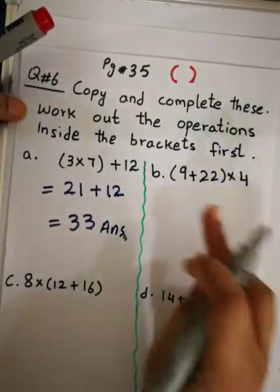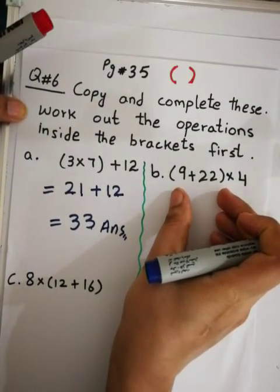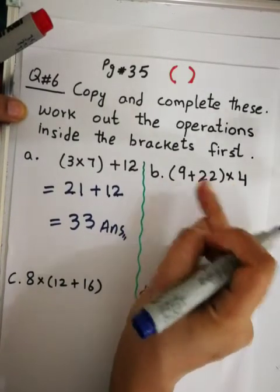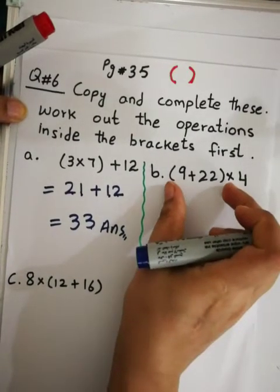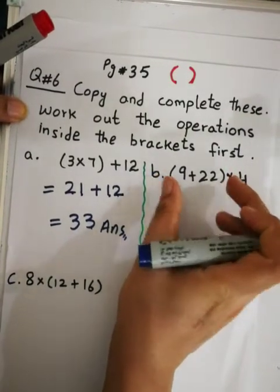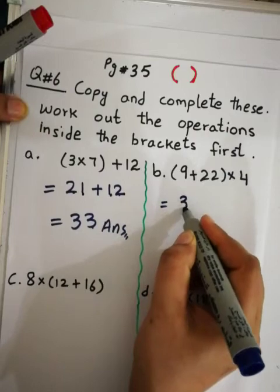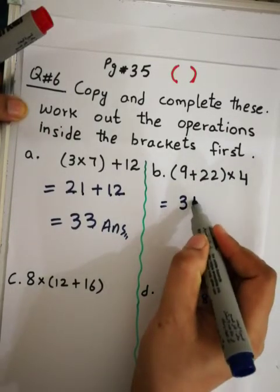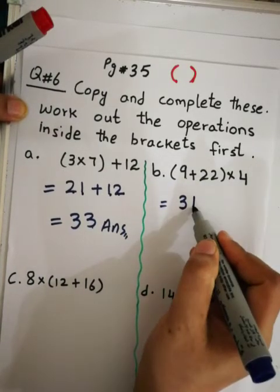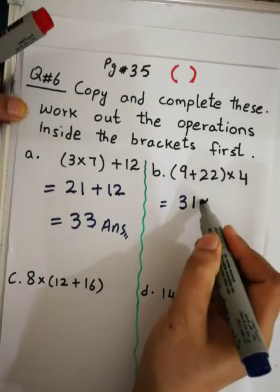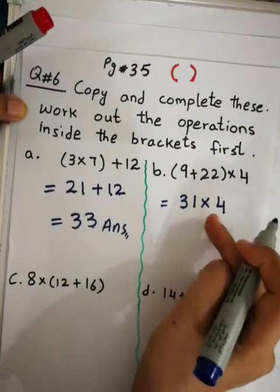Now come to part b. In the round bracket we have 9+22, then multiply 4 outside. So we solve the bracket first: 9+22 = 31. The ×4 comes down as it is.